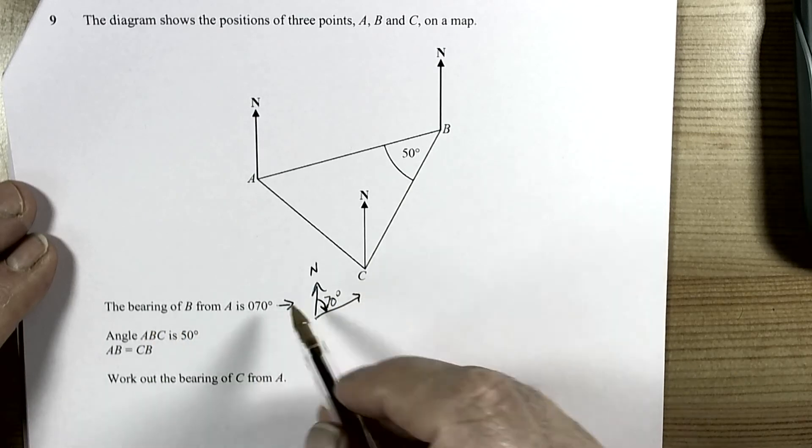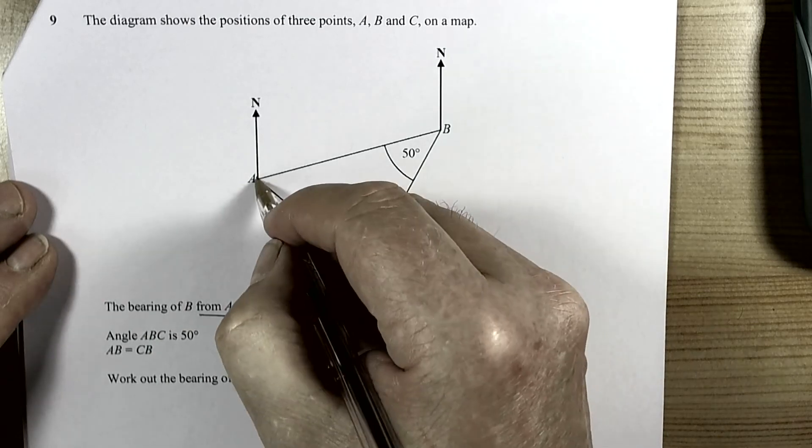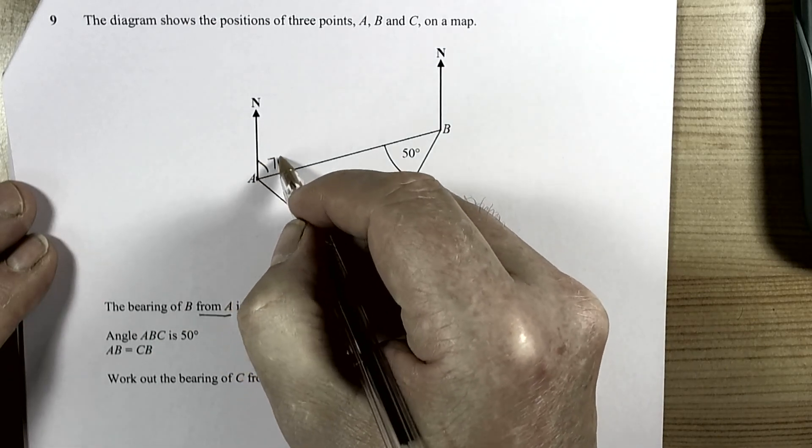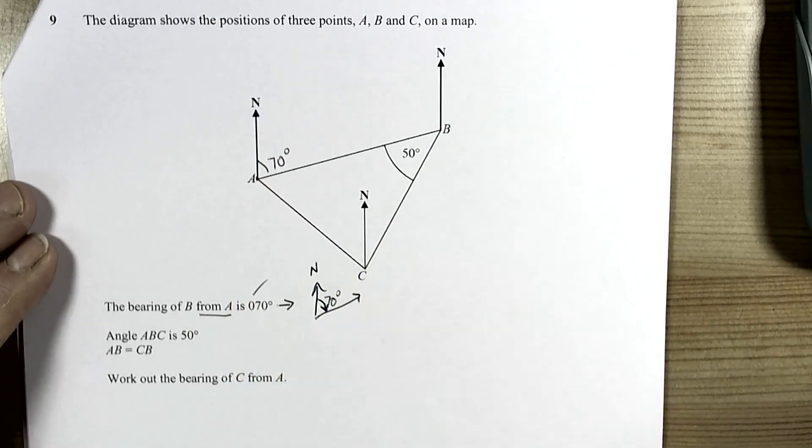So the bearing of B from A. So from A means we're stood at A. So this angle here must have been 70 degrees. Ok, so we've used that bit of information.